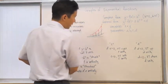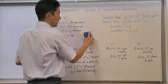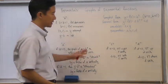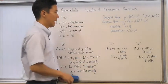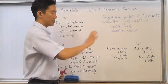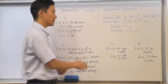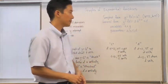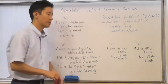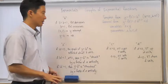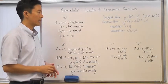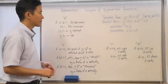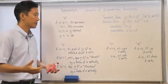Parameter c takes your function and moves it left or right c units based on the value of c. Parameter d does essentially the same thing except it moves the graph up or down.